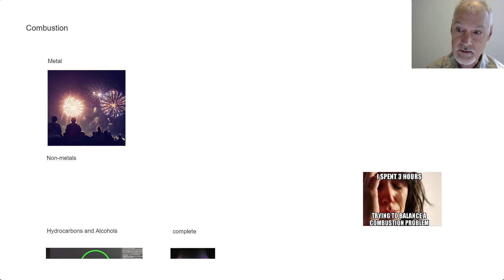In this program, we're going to look at the combustion of metals, non-metals, and hydrocarbons and alcohols. Let's start off with a definition of combustion. Combustion is a reaction in which an element or compound burns in oxygen. Some people do add a little bit more to this. They do usually mention it's highly exothermic and rapid, but we'll stick with the first definition. It's simply the reaction with an element or compound burned in oxygen.